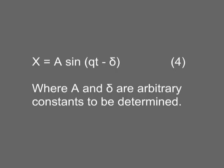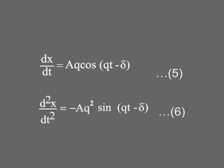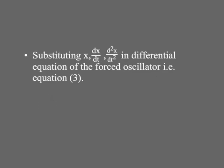This part of the solution can be obtained by trial and error method. Let its solution be x = A sin(qt − δ), which is equation 4 — the displacement equation, where A and δ are arbitrary constants to be determined. Differentiating with respect to t: dx/dt = Aq cos(qt − δ), which is equation 5. Differentiating again: d²x/dt² = −Aq² sin(qt − δ), which is equation 6.